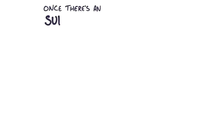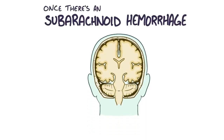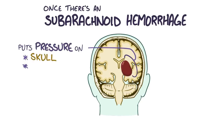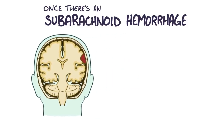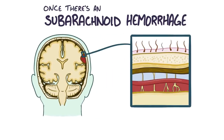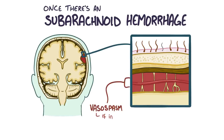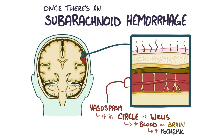Regardless of the cause, once there's a subarachnoid hemorrhage, blood starts spewing out from a damaged blood vessel and creates a pool of blood which increases pressure in the skull and puts direct pressure on nearby tissue cells and blood vessels. It also means that less blood is flowing downstream to the cells that need it, leaving the downstream tissue deprived of oxygen-rich blood. Healthy tissues can die from both the direct pressure and the lack of oxygen within a few hours. Another complication is that blood vessels bathing in a pool of blood can start to intermittently vasoconstrict — called vasospasm. If the vasospasm affects arteries in the Circle of Willis, it will reduce the supply of blood flow to the brain, causing further ischemic injury.